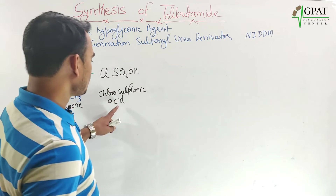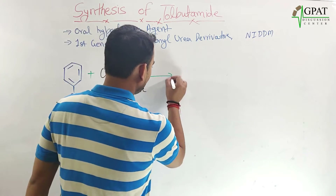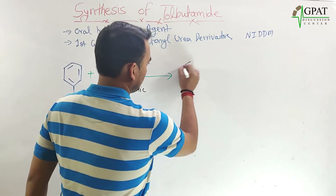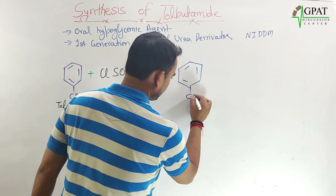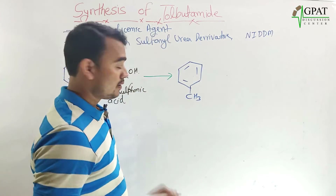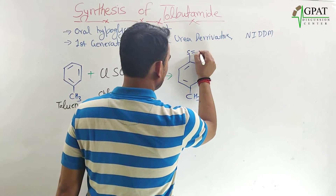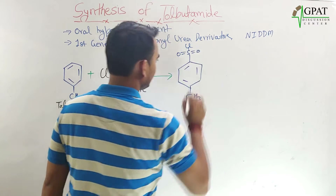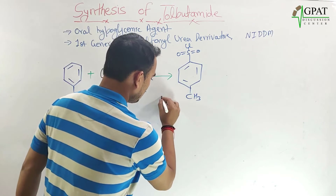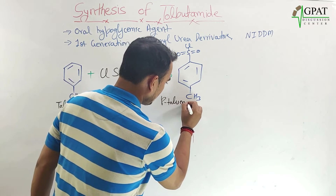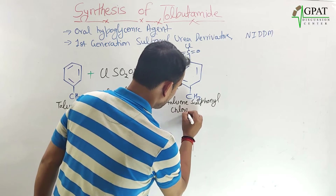When chlorosulfonic acid is reacted with toluene, we obtain paratoluene sulfonyl chloride. The product contains an SO2Cl group at the para position. This compound is paratoluene sulfonyl chloride.